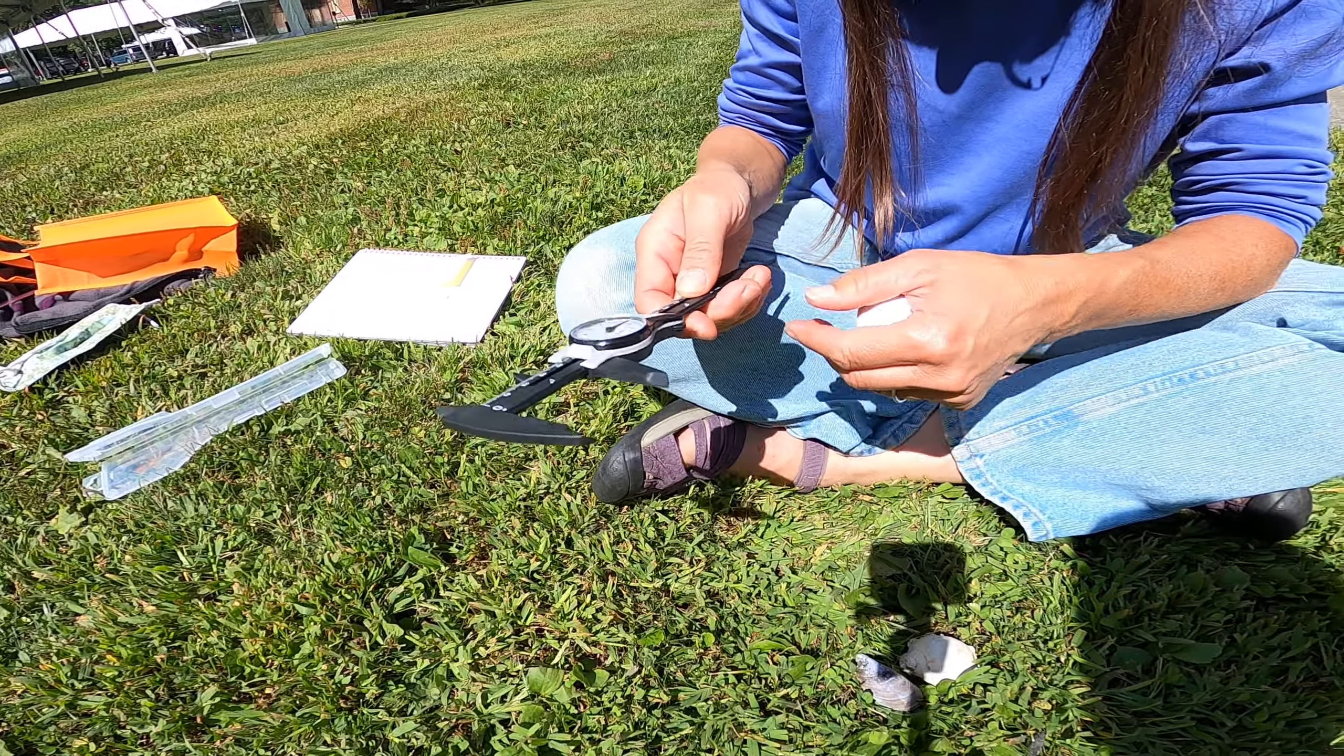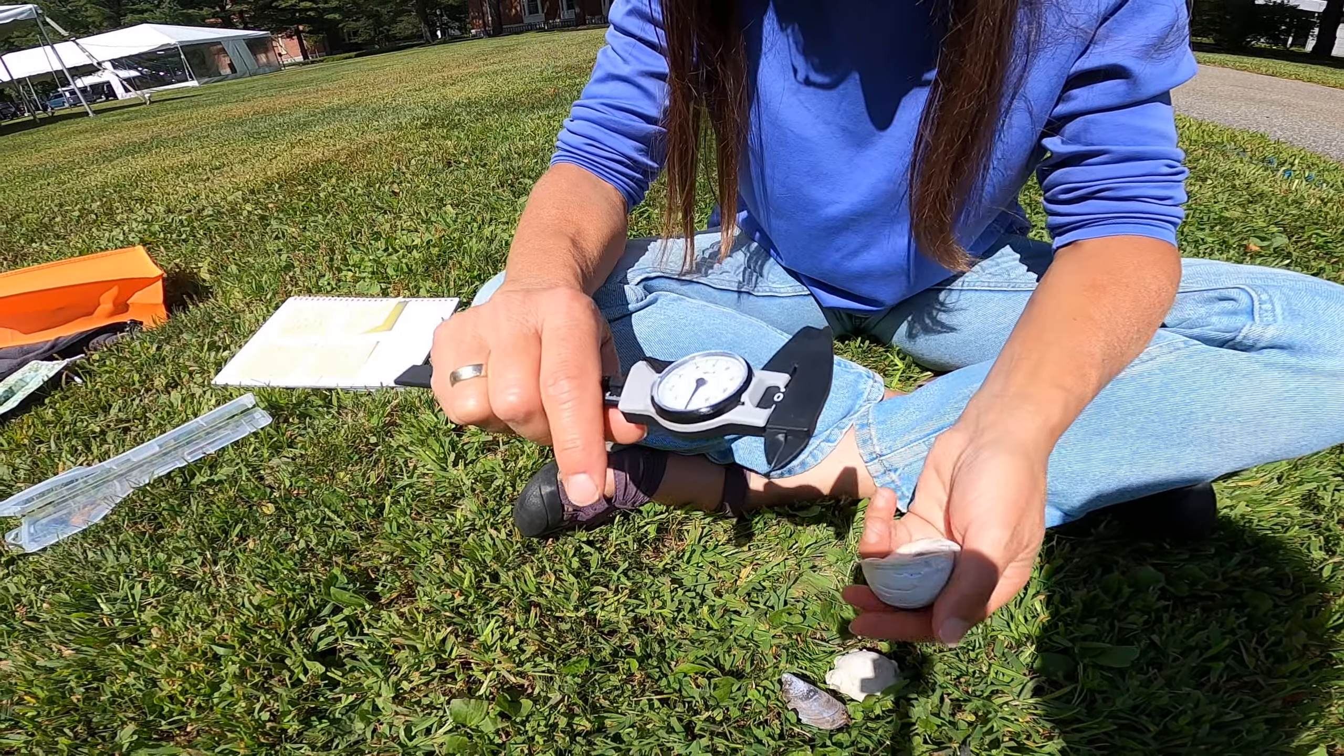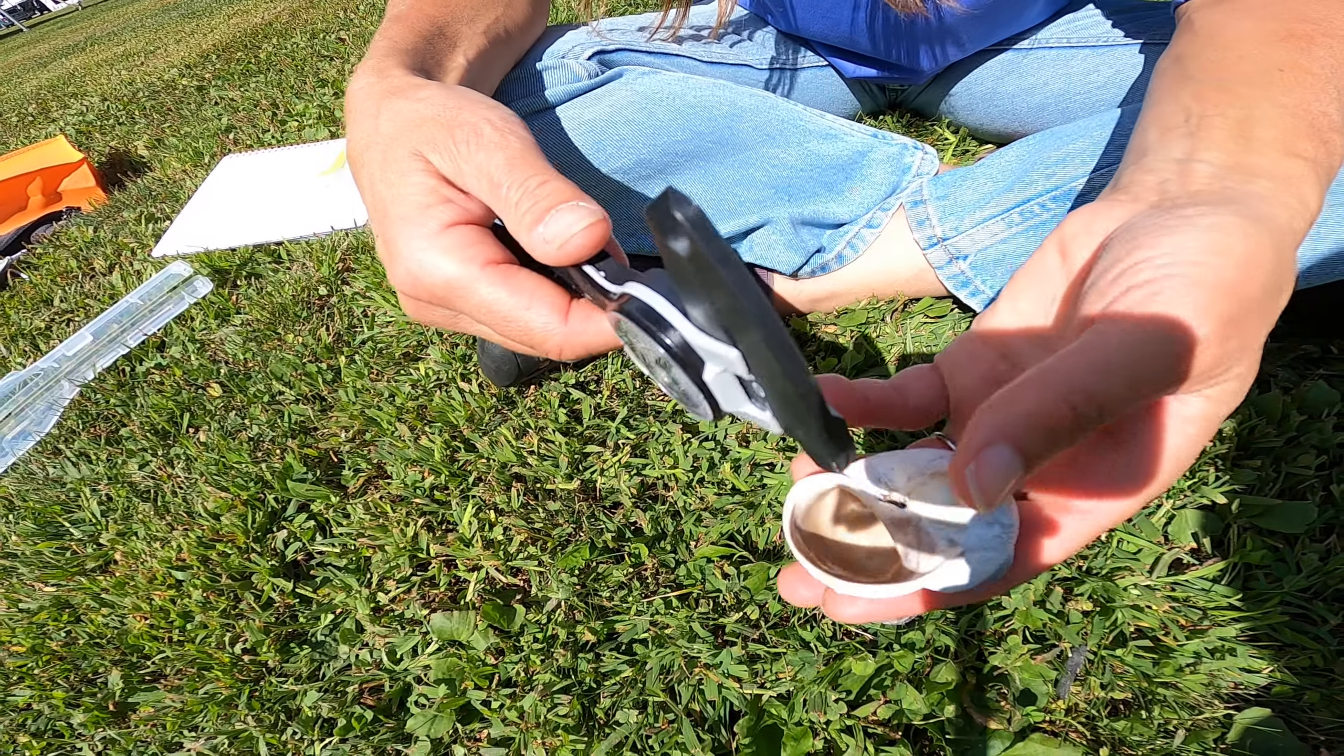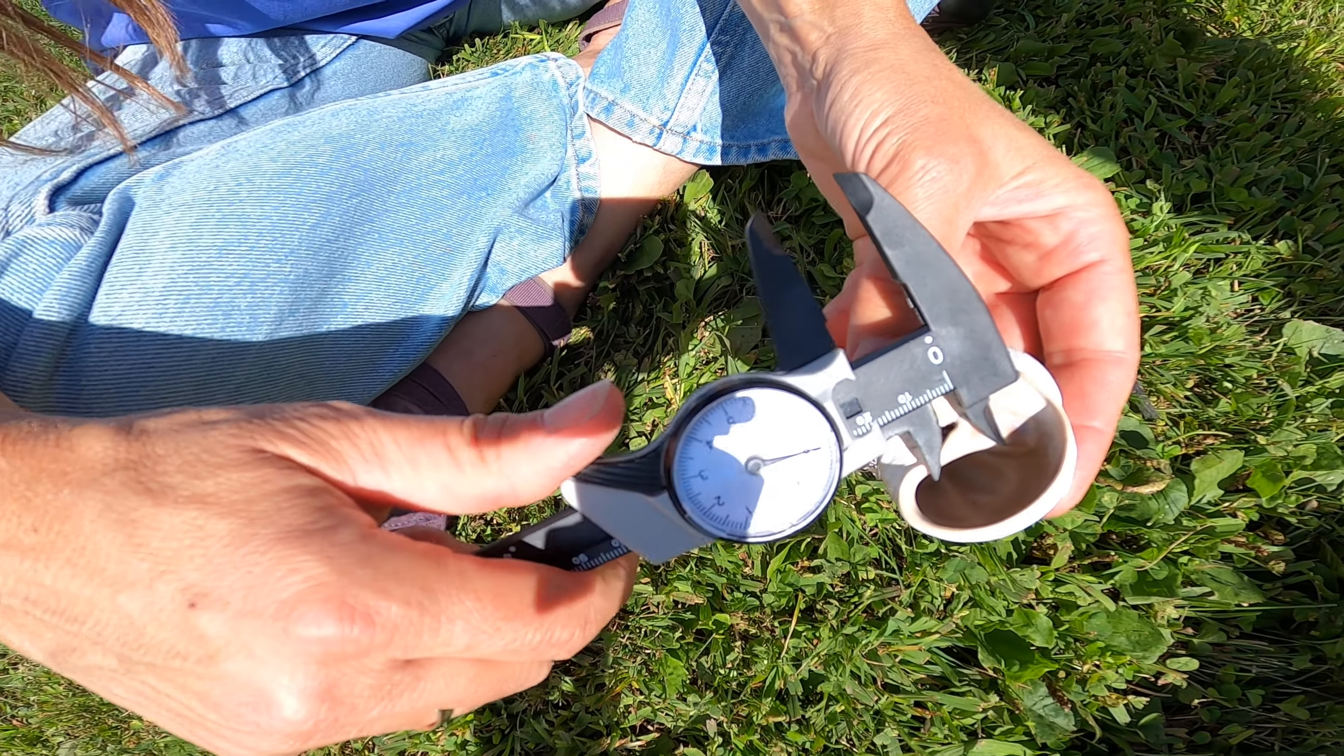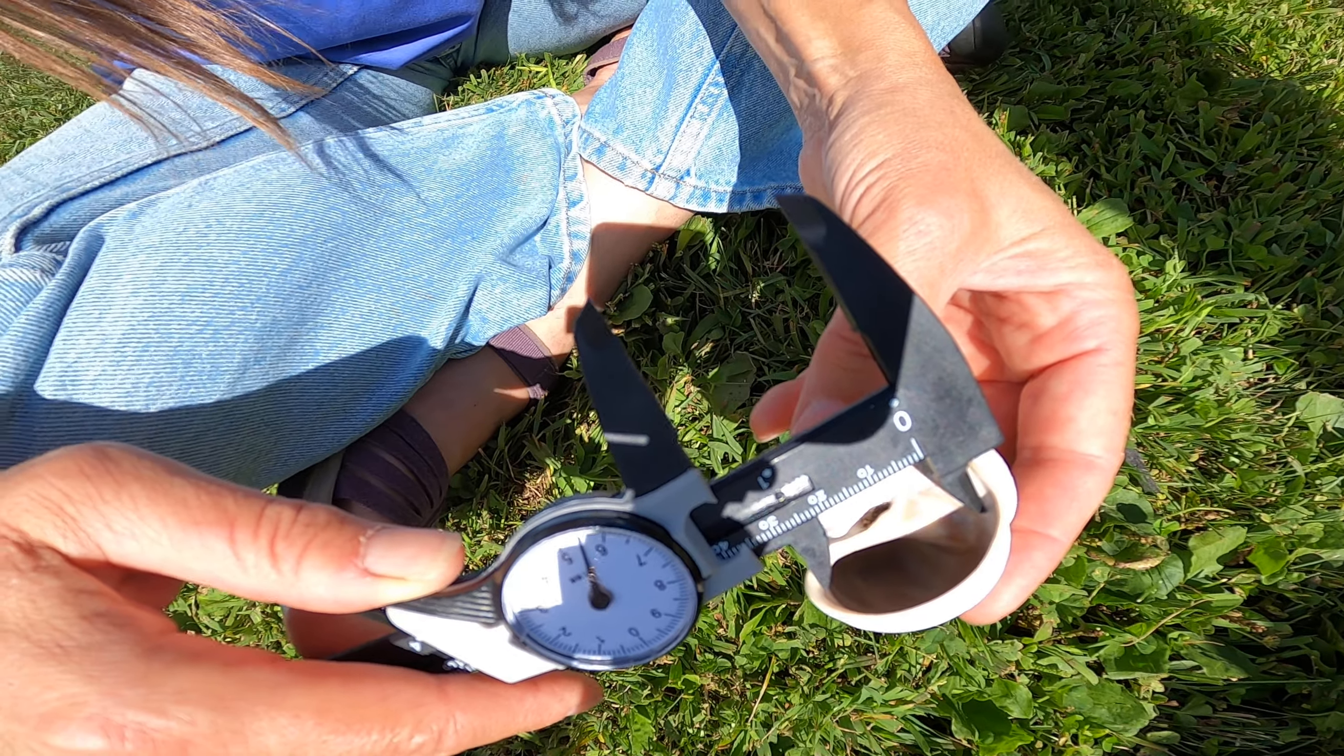Another fun thing about these calipers is that you can measure the inside diameter. This is for measuring outside diameter on this side. This side is for measuring inside diameter. So again, we would put the calipers inside the aperture of the snail shell and we can measure this distance.